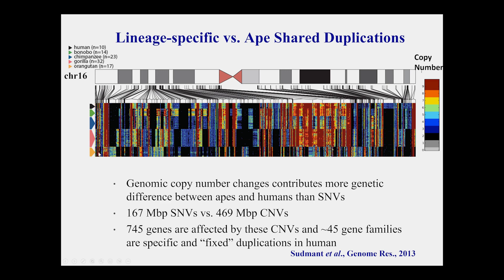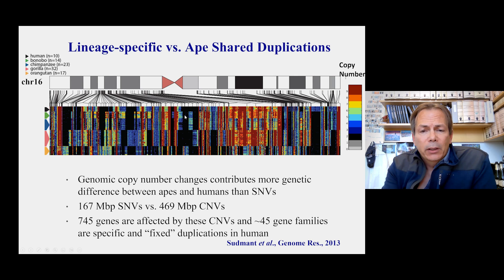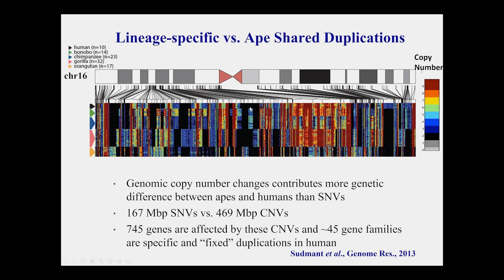The copy number of duplicated sequence is indicated by color: warmer colors mean higher copy number; black means not duplicated in that species. Your eye can immediately identify lineage-specific duplications and appreciate how much turnover there has been across the ape lineages. Here, for example, is a duplication that is human-specific — all humans have this duplicated segment of hundreds of kilobases, and no other ape has it. Similarly, there are things specific to the orangutan or gorilla.